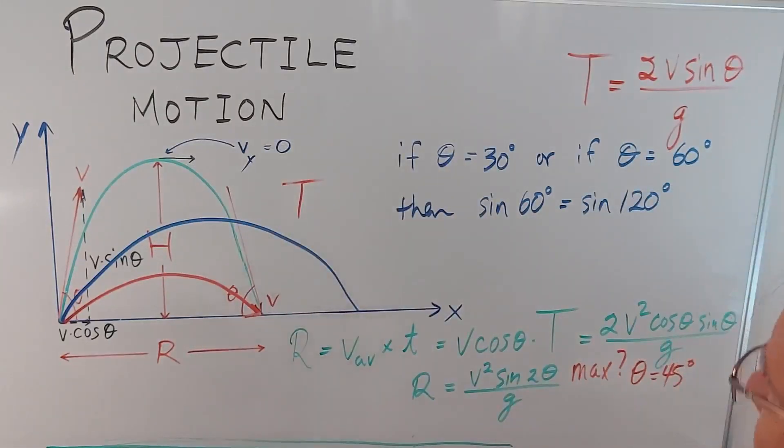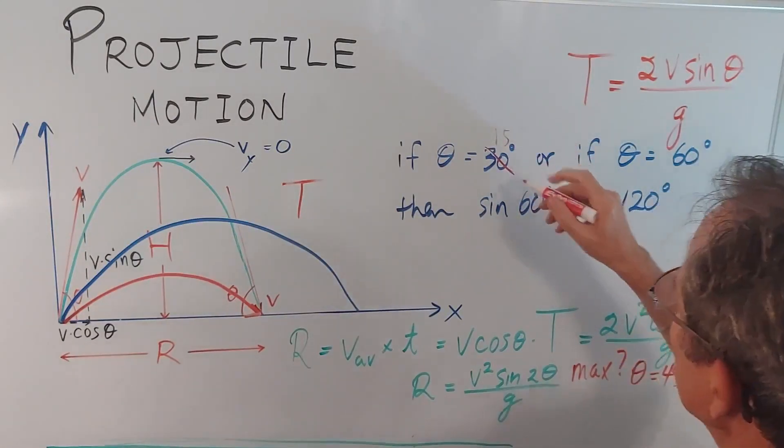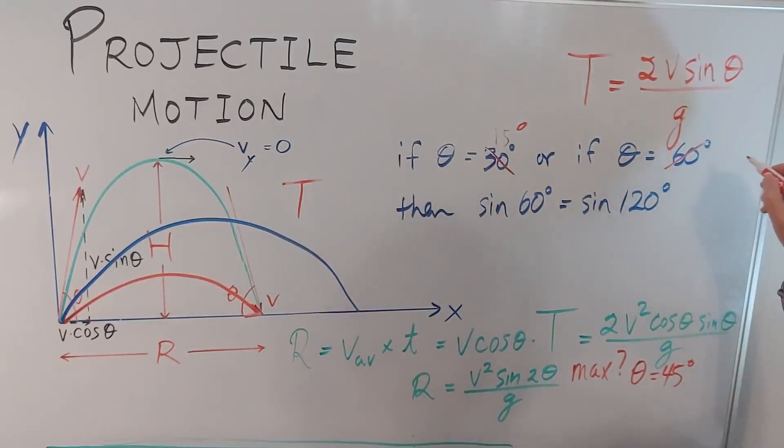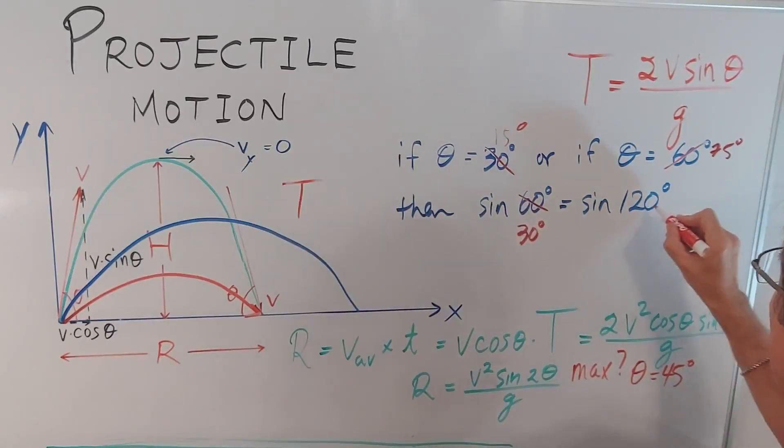Let me give you one more example. This could be maybe 15 degrees. And then this could be 75 degrees. Because the sine of 30 equals the sine of 150 for both a half.